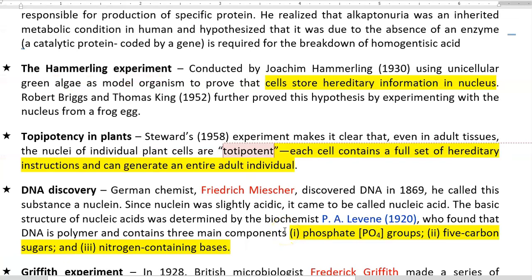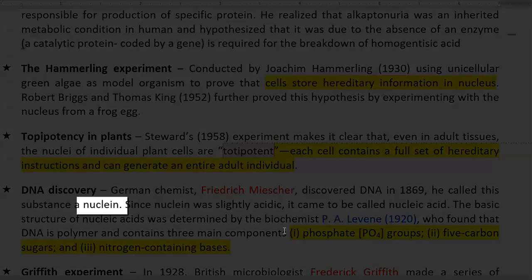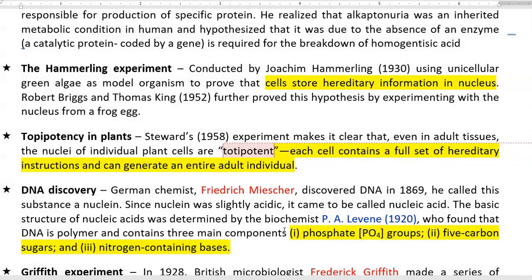DNA was discovered by Frederick Miescher from pus samples. He discovered DNA in the year 1869 and called this molecule nuclein, mainly due to its acidic nature. The acidic nature is imparted by the phosphate group associated with the nucleic acid, and because of this acidic nature it has been referred to as a nucleic acid.